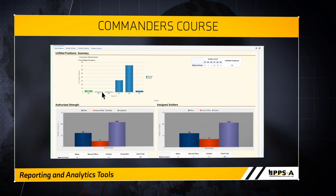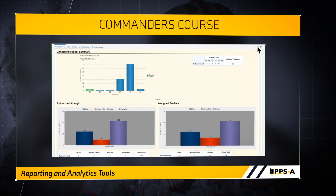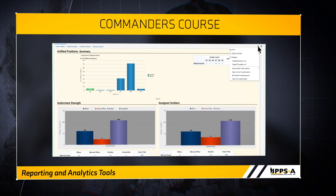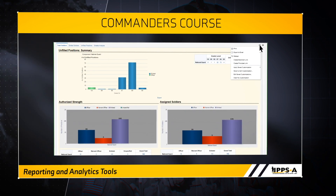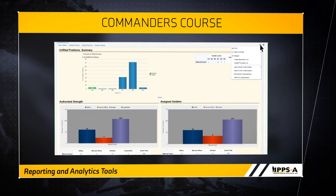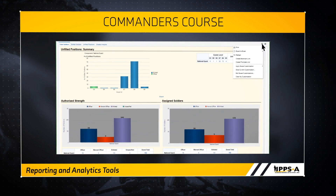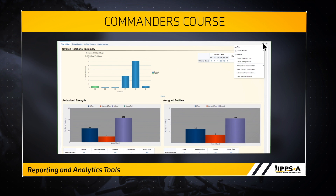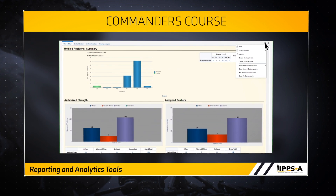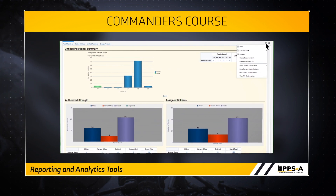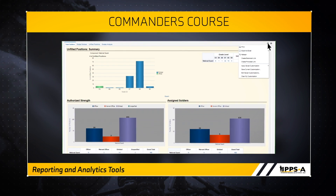You can customize the HARAR based on your preferences. Click the settings icon in the upper right-hand corner that looks like a cogwheel to display the menu. A drop-down list appears, allowing you to print, export to Excel, refresh the charts, and create bookmarks. You can save the customizations you make, so the page will display your preferences every time it is launched.